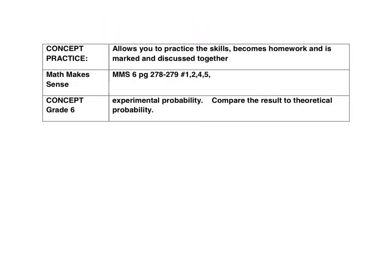Now move on to concept practice: pages 278 and 279, numbers 1, 2, 4, and 5 — experimental probability and comparing results to theoretical probability. Was your experiment fairly close to what was predicted in theory? If you have any questions as you work, please ask.